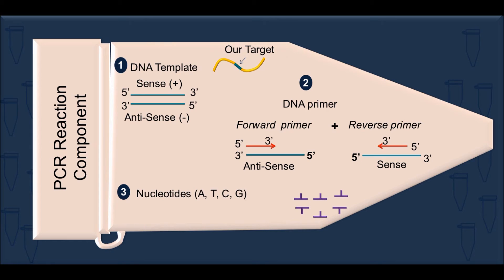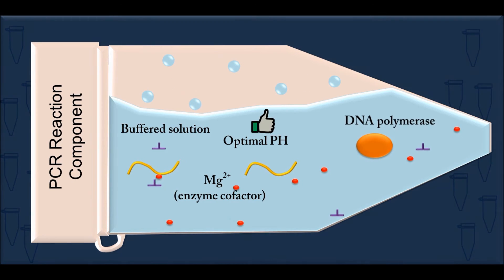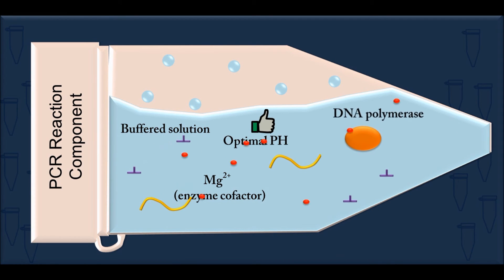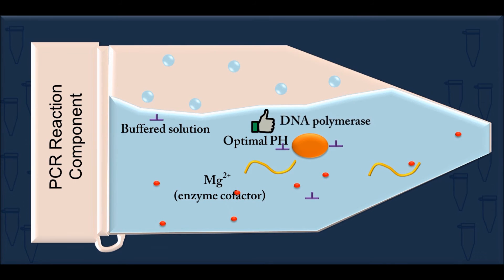Number three is the DNA nucleotides, which are the building blocks in the synthesis of new DNA strands. Number four is the DNA polymerase that creates new complementary DNA strands by assembling nucleotides to the 3' ends of the primers. The PCR reaction components are added into a buffer solution that maintains the optimal pH and concentration of ions.